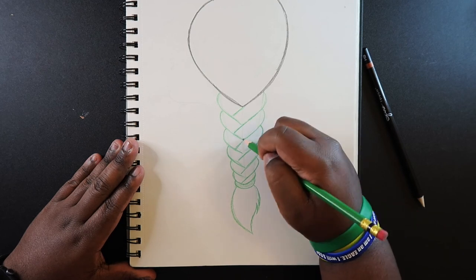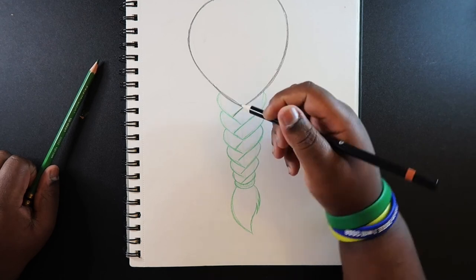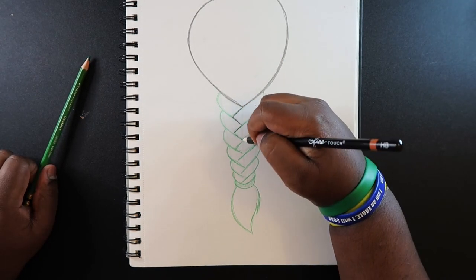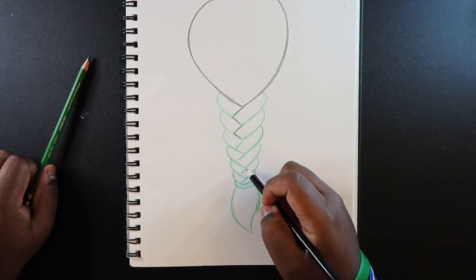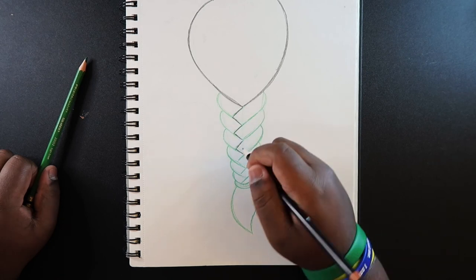Then just darken the rest of the lines. I'm just gonna go in with my pencil and show you guys the zigzag pattern that we ended up making. See, that's like a really smooth zigzag.